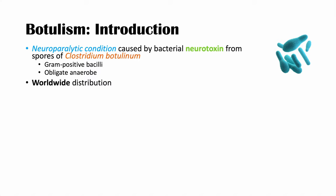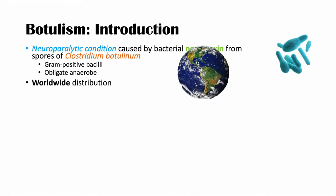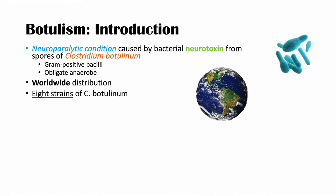This type of bacteria is widespread — it is actually worldwide and can be found everywhere. There are actually eight strains of Clostridium botulinum, defined as strains A, B, C, D, E, F, G, and H. All of these produce a different toxin.